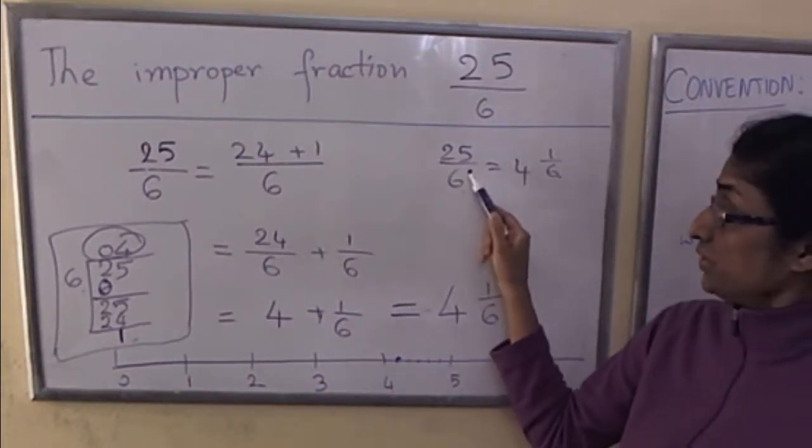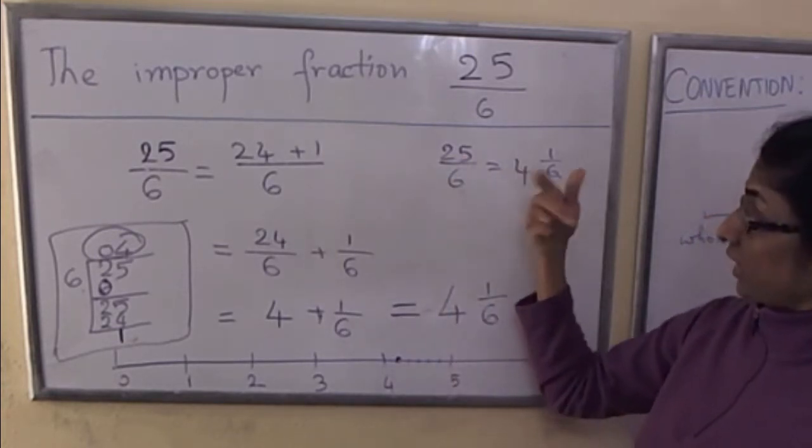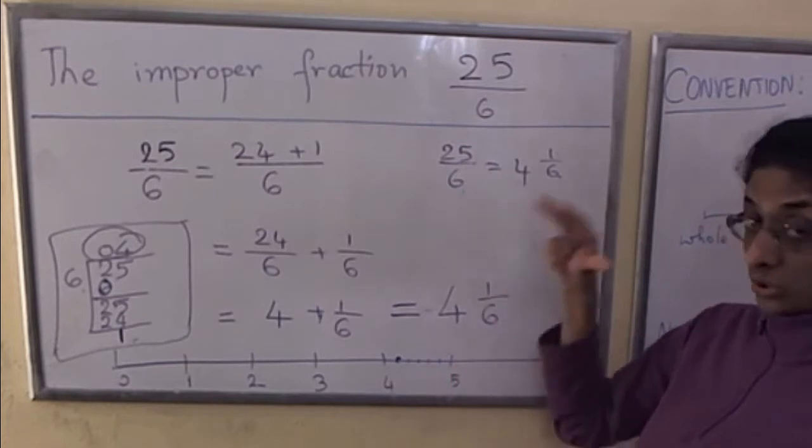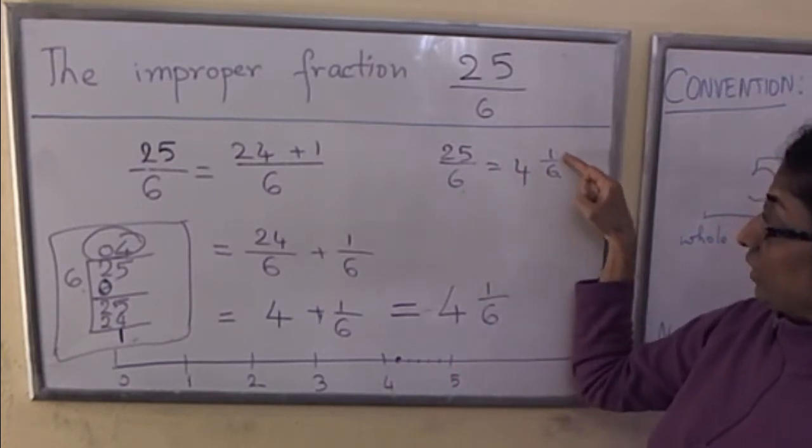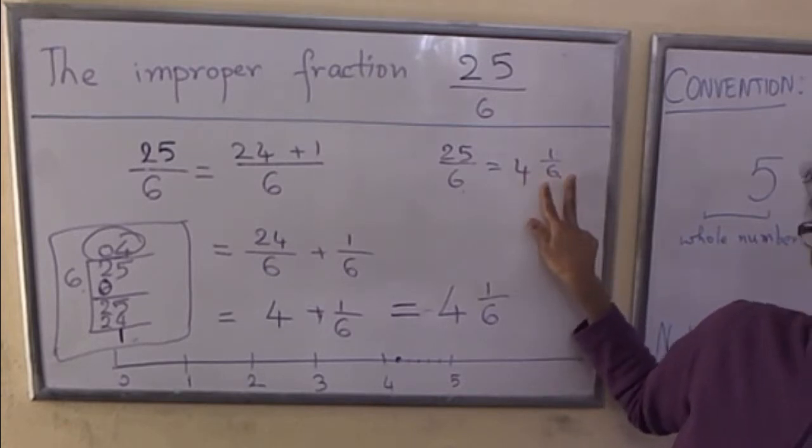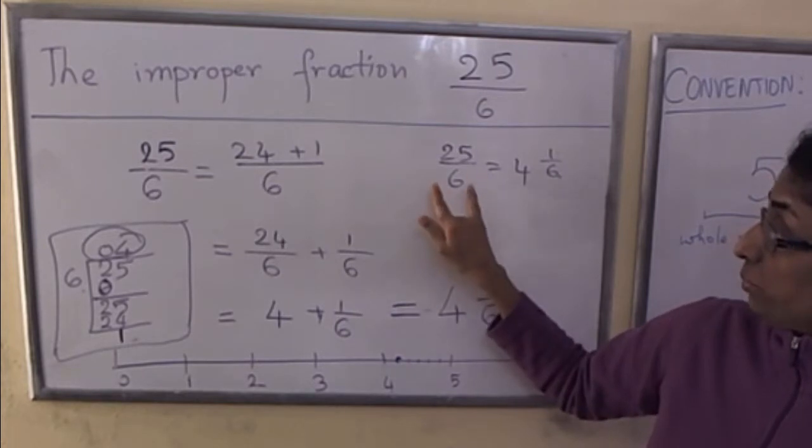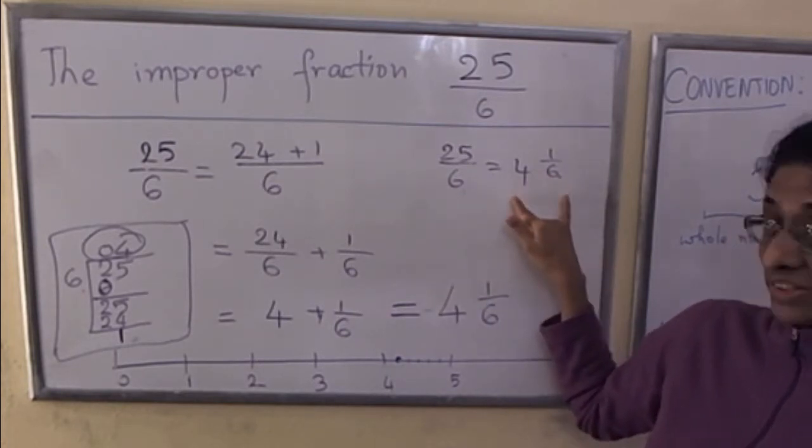For small numbers it's also okay to just simply count in 6s on your fingers. Whatever multiple you get to, the highest multiple gives you 4, and then 1/6. If you do it right, you will get a whole number and a proper fraction. This is how you convert an improper fraction into a mixed number.